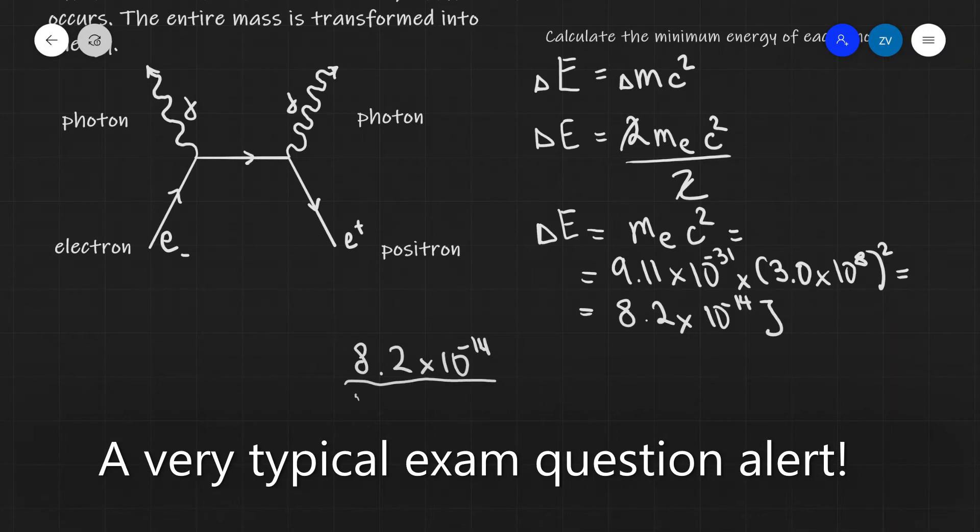So let's convert it to mega electron volts. So it's going to be divided by 1.6 times 10 to the power of minus 19 like so. And this is going to give us approximately 0.51 mega electron volts.